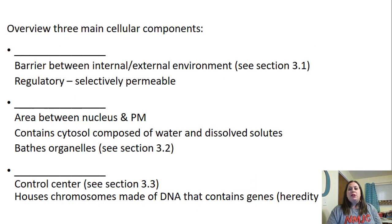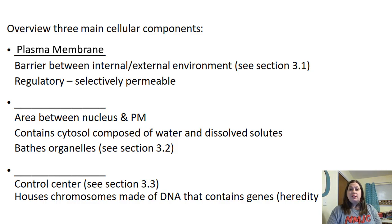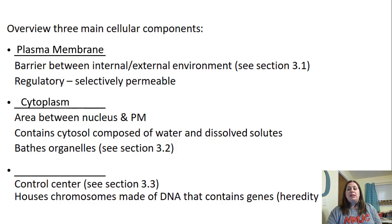The plasma membrane acts as a barrier between the internal and external environment. Its purpose is regulation — it determines what gets to come into the cell and what gets to go out. The cytoplasm contains the cytosol, which is water with dissolved solutes, and covers the different organelles, meaning tiny organs. The nucleus is the control center and houses the chromosomes made of DNA, which contains our genes — our hereditary units.